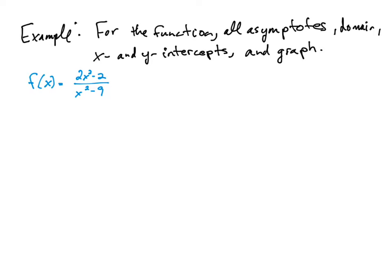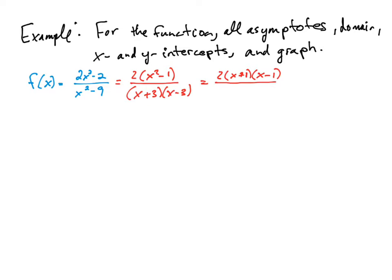Let's look at a few examples. The first one says: for the function, find all asymptotes, the domain, x and y-intercepts, and then graph. It's a good idea to always factor the top and the bottom. Factoring out 2 from the numerator gives x squared minus 1 over the denominator, which is a difference of squares: x plus 3 times x minus 3. Then in the numerator, we also have a difference of squares: 2 times x plus 1 times x minus 1, over x plus 3 times x minus 3. No factors cancel in the numerator and denominator.